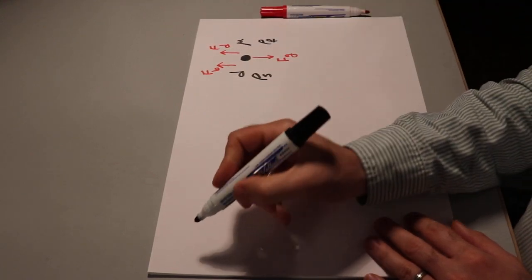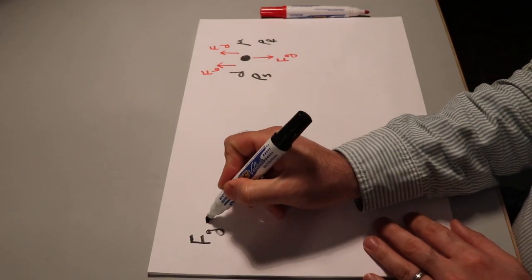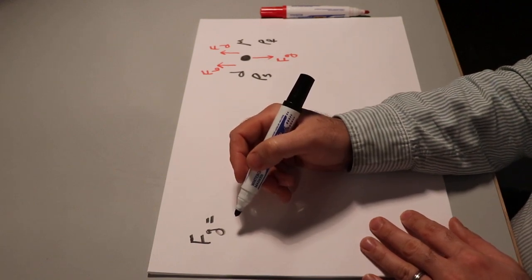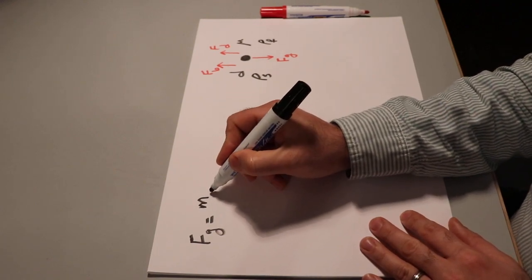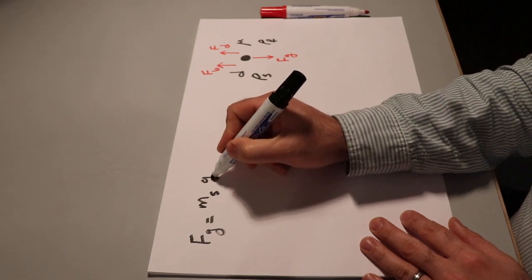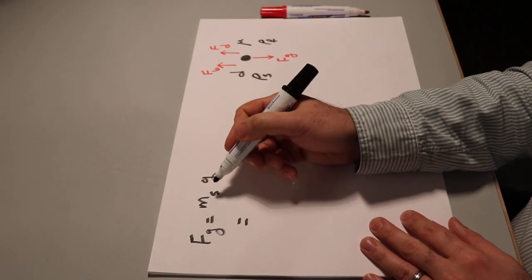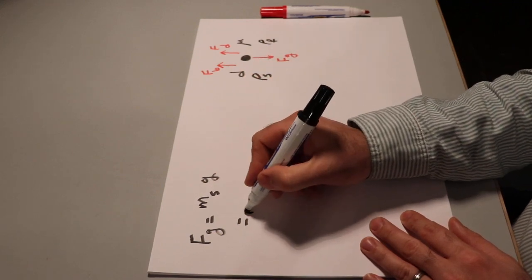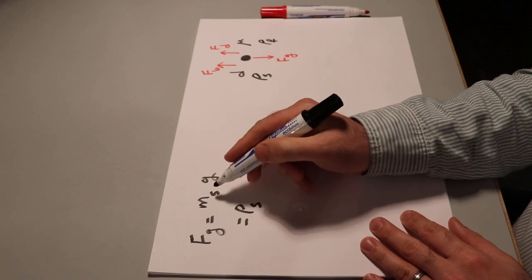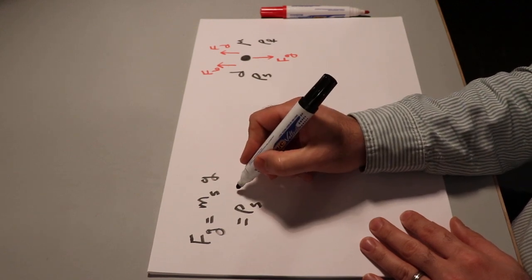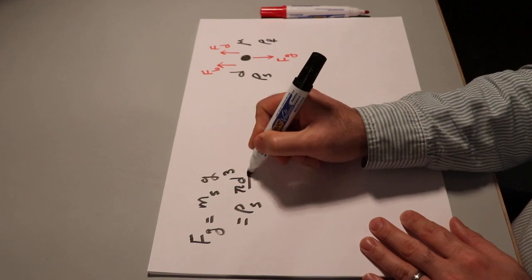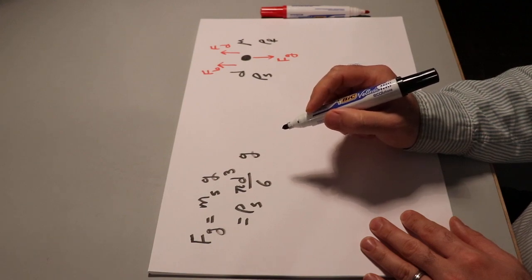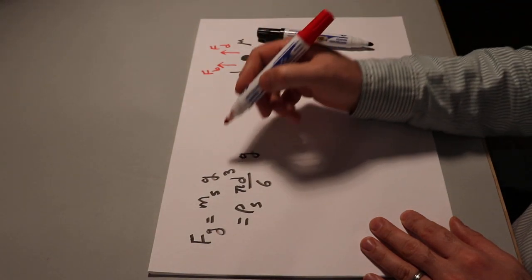So Fg, the weight of the particle, we know it is equal to mass of the particle times the acceleration gravity. That is ms times g. And instead of the mass, I can write density of the particle times volume of the particle. So it will be rho s times volume. And the volume of the sphere, we know it is equal to pi d cubed divided by 6 times g. So that will be the gravitational forces.